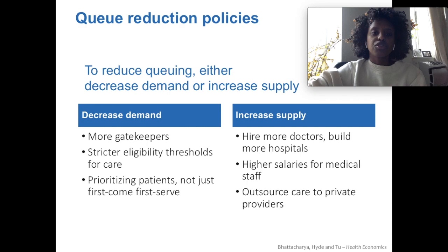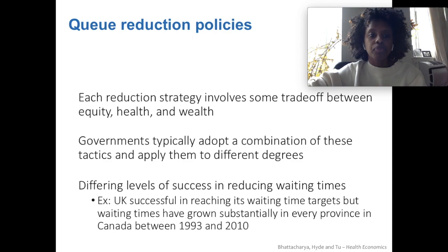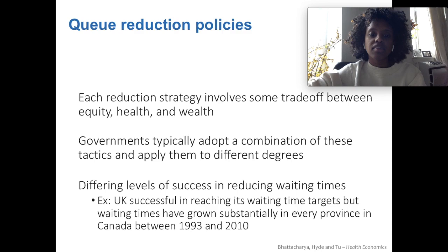There are two ways of reducing queues. One is decreasing demand, through things like gatekeepers, strict eligibility for accessing care, and prioritizing or triaging patients. The other is increasing supply — you can hire more doctors, build more hospitals, pay medical staff better to recruit more people, or outsource care to private providers if there is limited supply in the public market. Each strategy involves trade-offs between equity, health, and wealth. Governments typically adopt a combination of these tactics and apply them to different degrees and in different situations, so different countries will have different levels of success with reducing wait times.